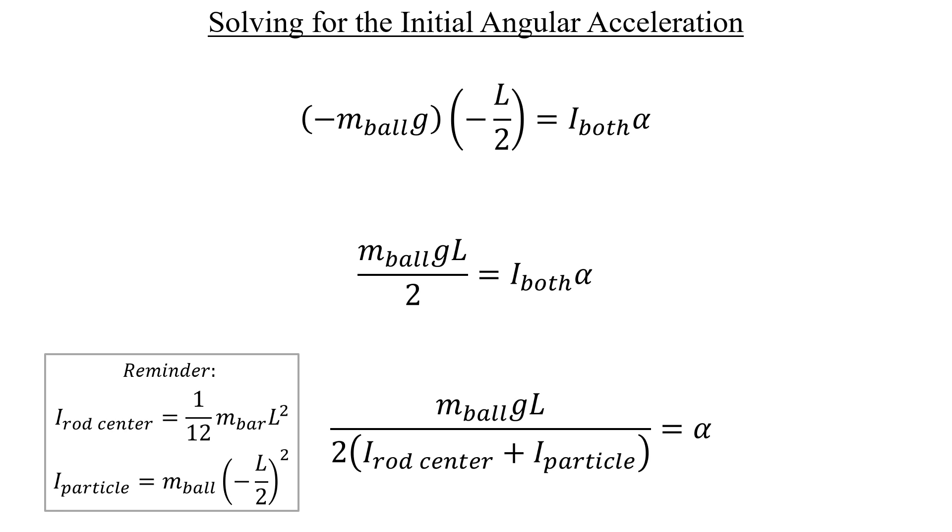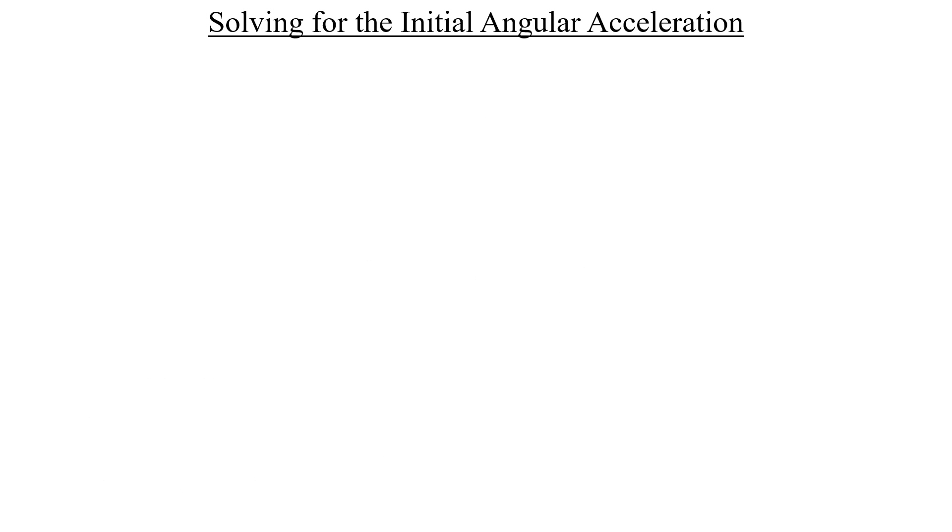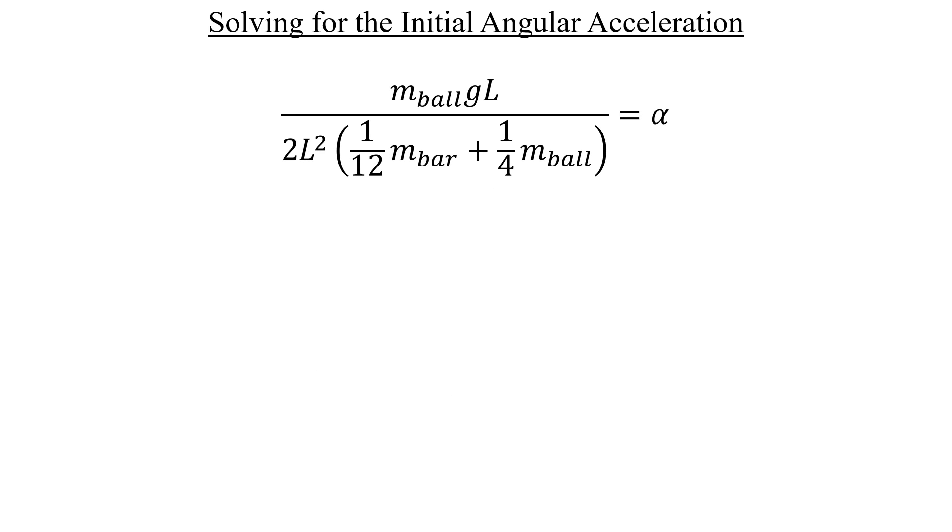We should start by squaring negative L over 2 in the denominator. Next, I'll factor the L squared quantity out of both terms inside the parentheses, since we can do some canceling with that. One factor of L upstairs will eliminate one factor downstairs. And so our expression will look like this after we get rid of those.